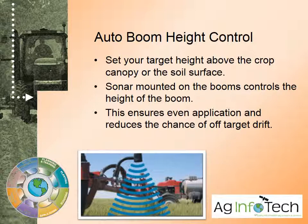Auto boom height control can be controlled by the same displays. Basically, you set the target height — either above the crop canopy or the soil surface — that you want the booms to be at. Sonar systems mounted on the booms shoot a sonar signal down and read back how high we are from the crop canopy or from ground level, and it automatically controls the boom to keep it at the proper height. This ensures an even application and greatly reduces the chance of off-target drift from the boom being set too high.